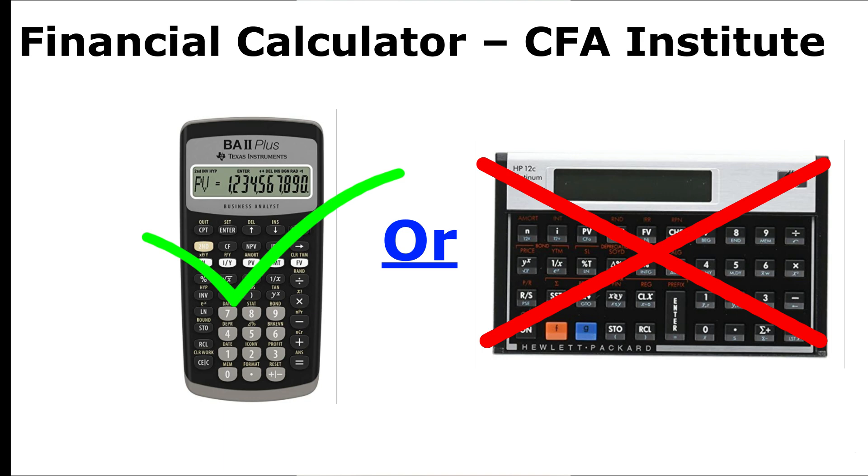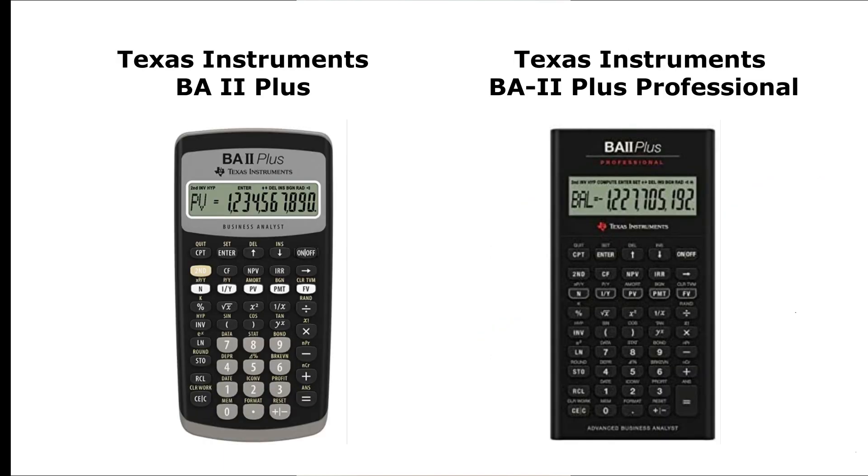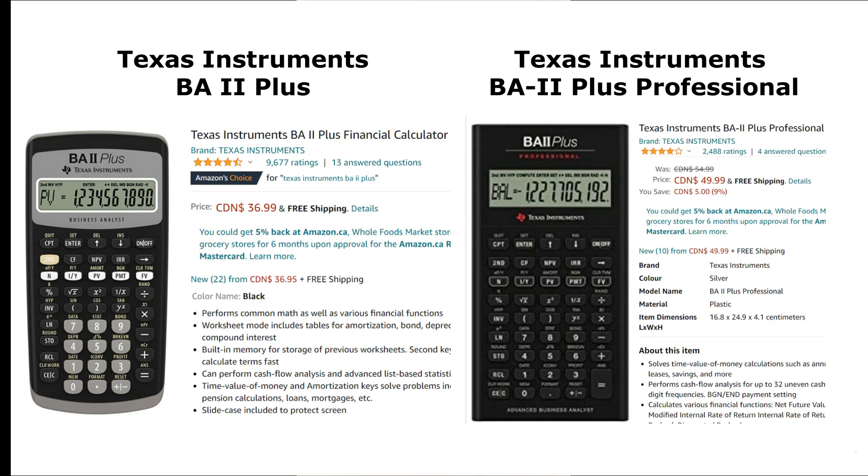Most study notes providers include Texas Instrument instruction in their notes, so usually CFA candidates use the Texas Instrument. You have two calculators that you could use during the exam: the Texas Instrument BA2+, and the Texas Instrument BA2 Plus Professional. Both have similar features and function, however the Professional costs much more. From my basic Amazon search, the BA Plus costs $37, whereas the Pro costs $50. By the way, this is Canadian dollar, not real money.